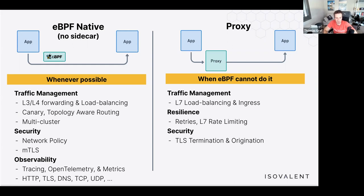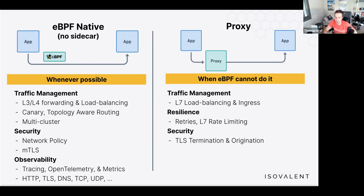A proxy is also still needed for resilience features like retries, layer 7 rate limiting, and TLS termination and origination. Note: this is not mTLS — this is when you want to terminate or originate TLS on behalf of the app. Network bandwidth limiting without a proxy is supported, but limiting HTTP requests per second requires a proxy.